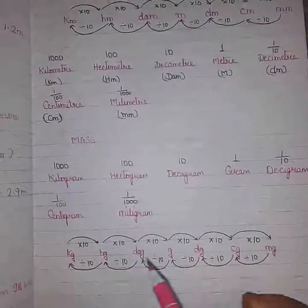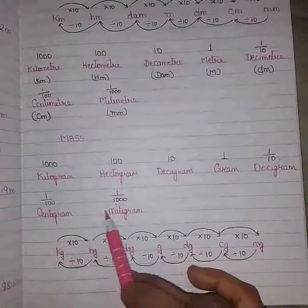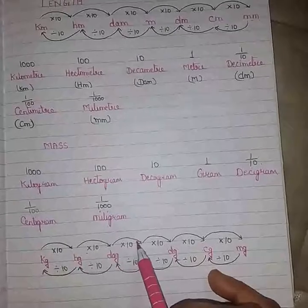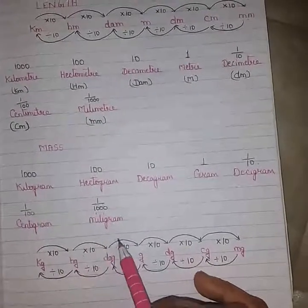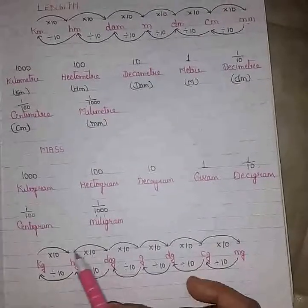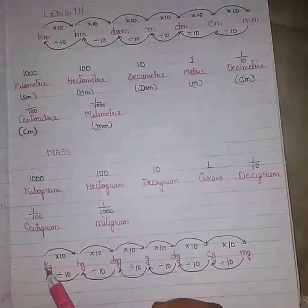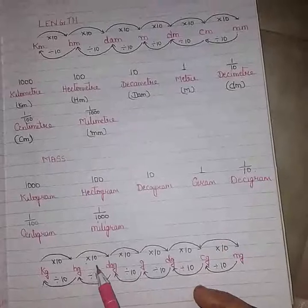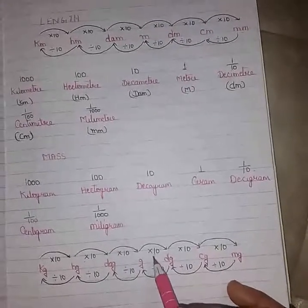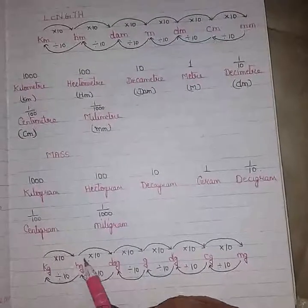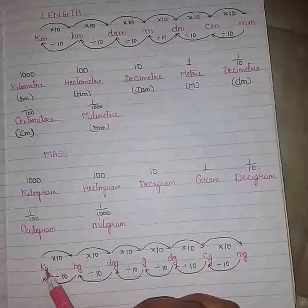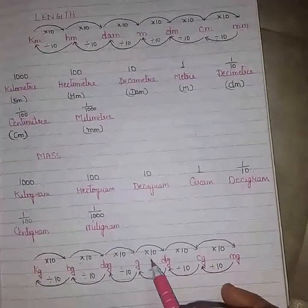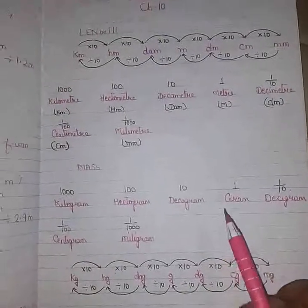Let's take an example. If we want to convert kilogram to gram, how many skips? 1, 2, 3 skips — that means multiply by 1000, which is 10 × 10 × 10. If we want to convert kilogram to decigram, then 10 × 10 × 10 × 10, that means multiply by 10,000. These are the units for mass.